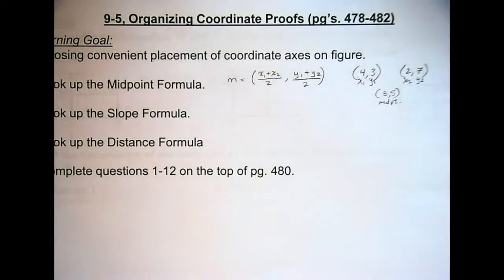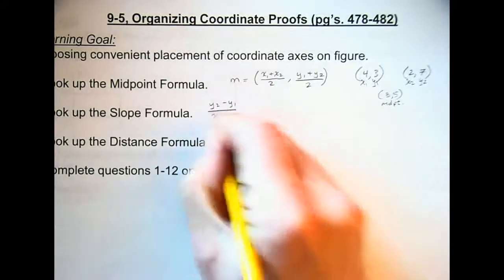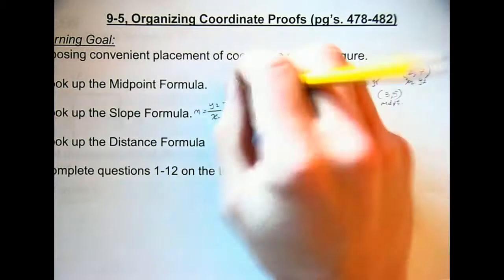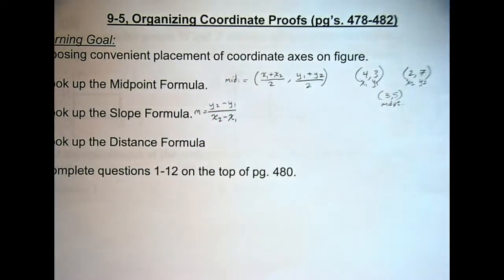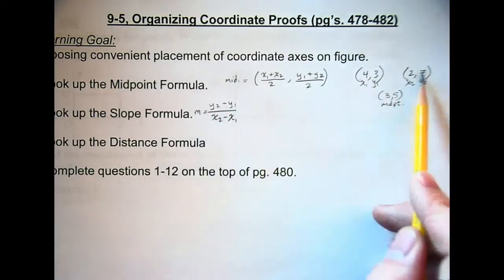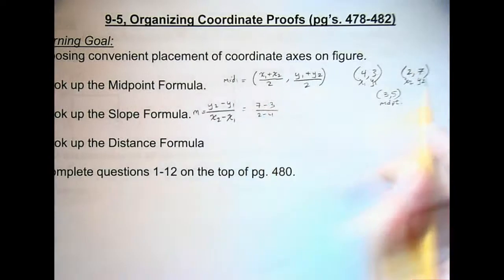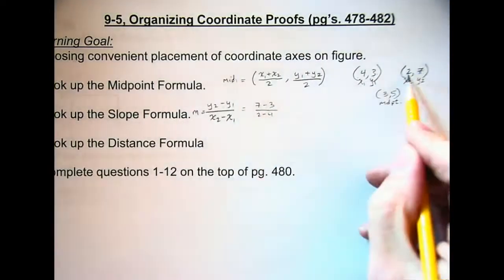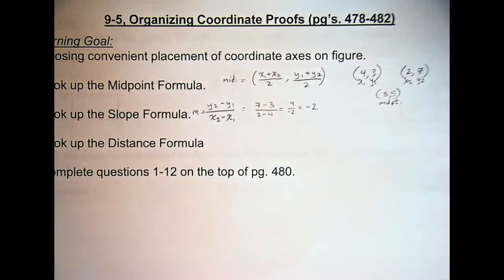Slope formula: slope equals y2 minus y1 over x2 minus x1. We usually abbreviate slope with the letter m. We have to label our points to use that. Using our example, y2 minus y1 is 7 minus 3, and x2 minus x1 is 2 minus 4. Notice I used the second y first, so I have to use x2 first. That gives me 4 over negative 2, or a slope of negative 2.